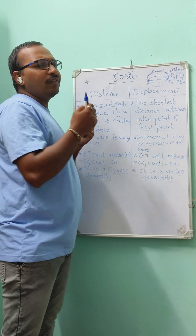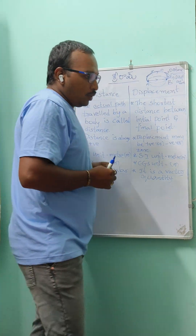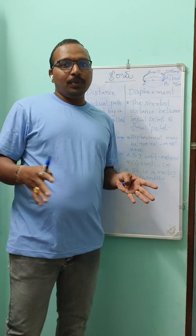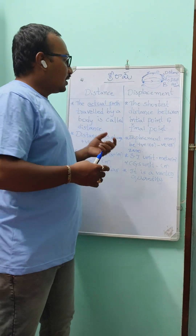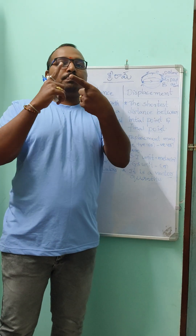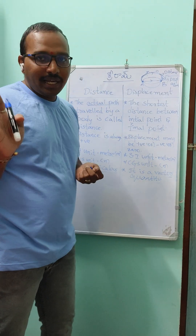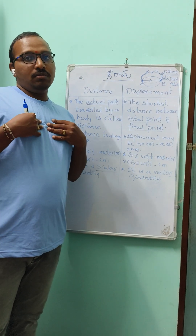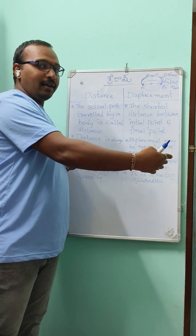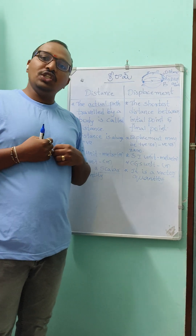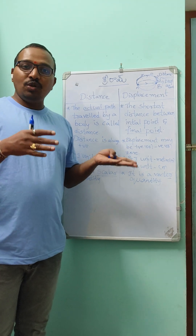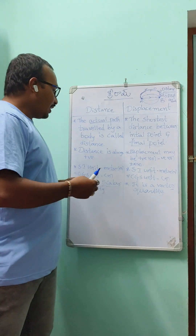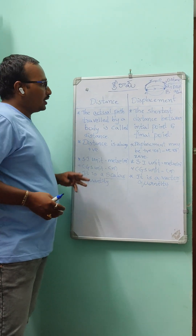Distance is always positive only. Whatever path you take — straight line or any route — the distance will always be positive. But displacement is not like that. If I went somewhere and came back to the initial position, my displacement is zero. Displacement can be positive, negative, or zero.